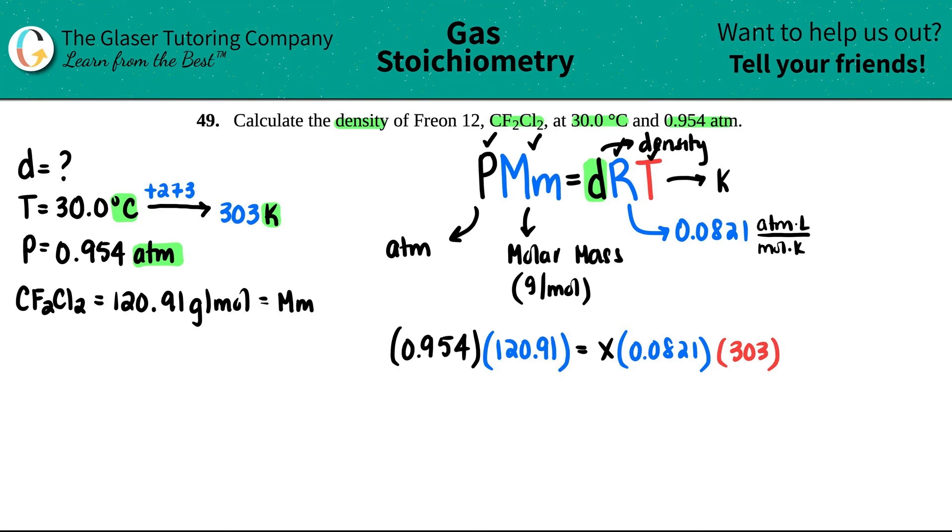Let's just solve for X. You can get this to be one number and this to be one number, but I like to plug all this into the calculator at once because I try not to round until the very end. So I'm going to just divide by 0.0821 and also by the 303. So what I do on that side, I got to do on this side. So I'm going to divide by 0.0821 and also by the 303. If that's the case, this goes bye-bye, this goes bye-bye, and we're only left with the X value.